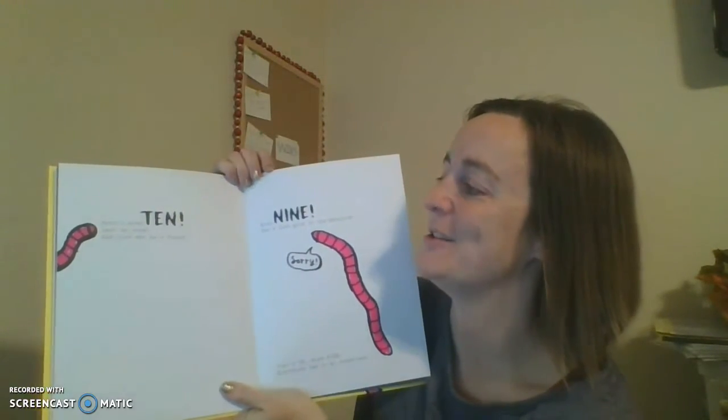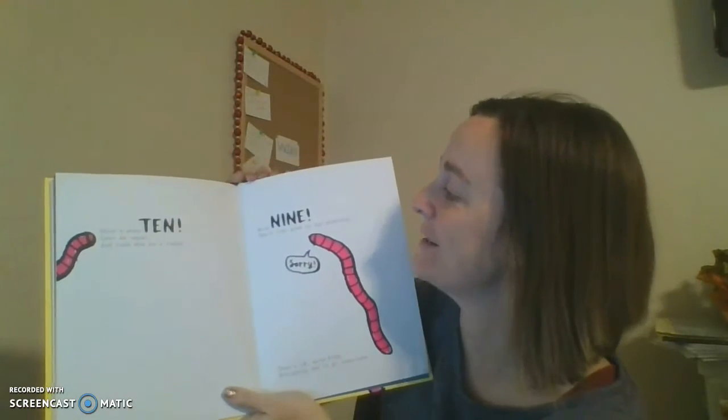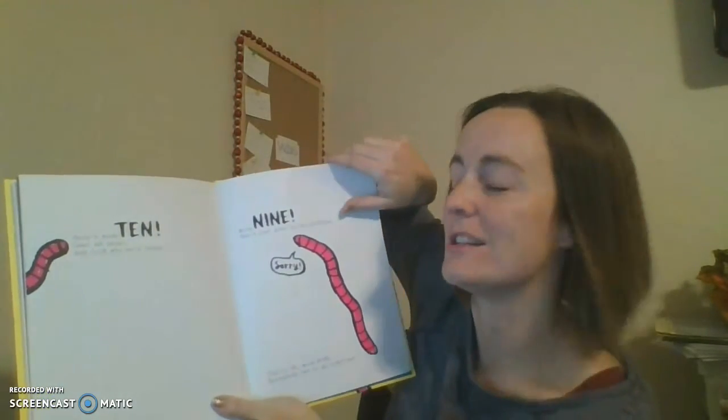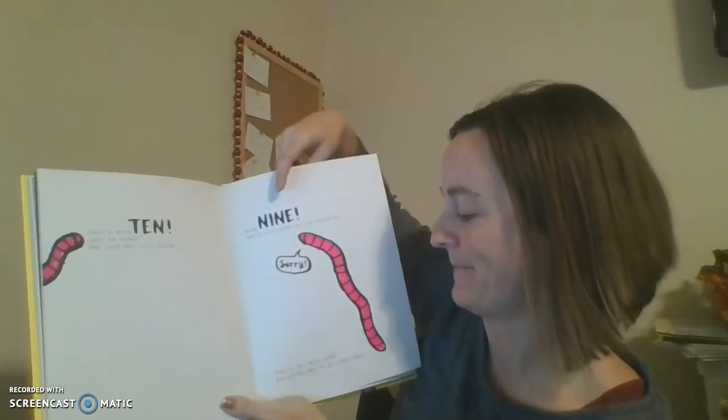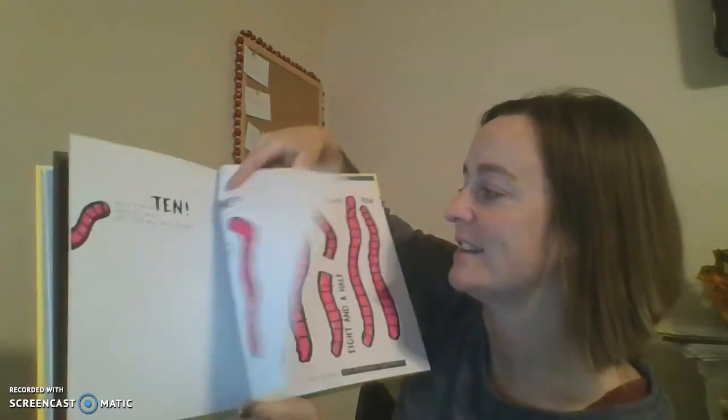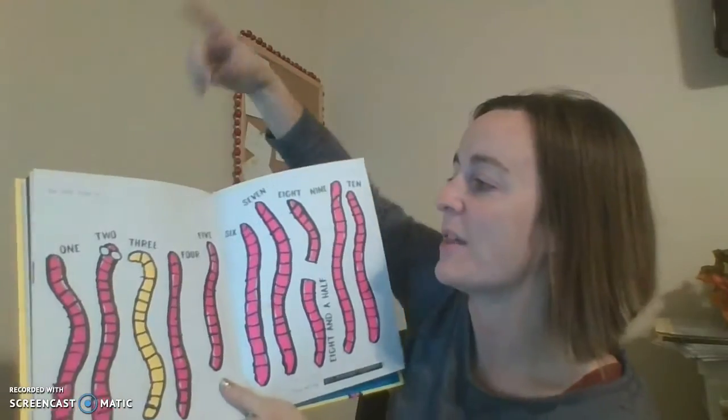Here's worm ten. Last as usual. And look who he's found. Worm nine. She just gone to the bathroom. Sorry. That's okay, worm nine. Everyone has to go sometimes. So now that's, you want to count them with me?